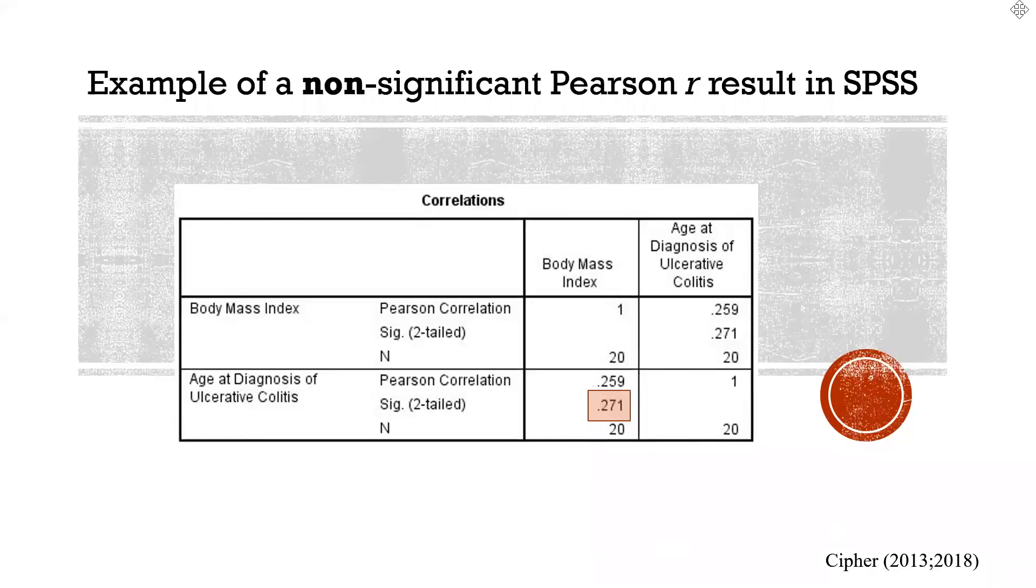As opposed to a non-significant Pearson R result in SPSS, where you see that there is a correlation value of 0.259, R equals 0.259. And right underneath it, the exact p-value is 0.271. In other words, there is a 27.1% chance that the null hypothesis is true with this particular Pearson R. So that is, of course, not acceptable to us in nursing research. And therefore, we retain the null hypothesis.